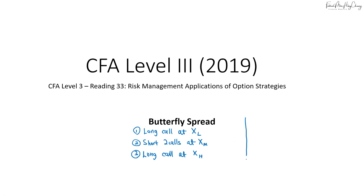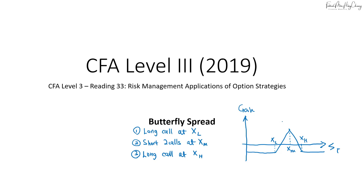The payout diagram shows the spot price on the x-axis and the gain on the y-axis. For a long butterfly spread strategy, we have three key strike prices: the lower, middle, and higher strike price. This strategy is profitable if the spot price is within that range, making it a low volatility strategy. If volatility is high, we end up losing. Maximum loss occurs at the extremes, while maximum profit occurs when the spot price stays at the middle exercise price.